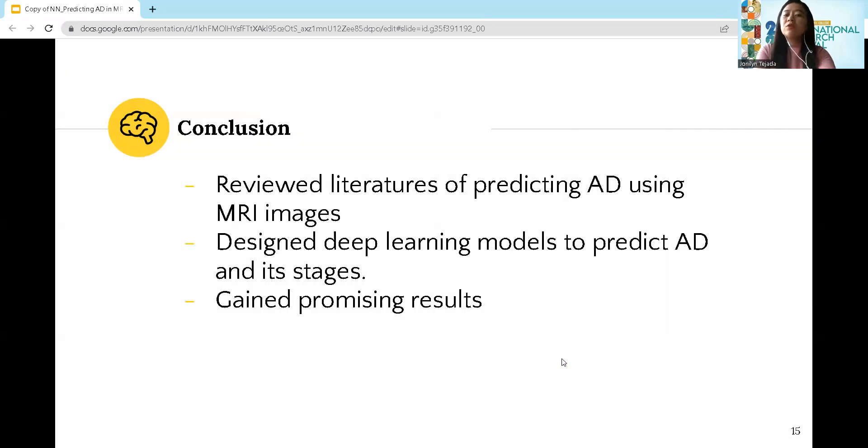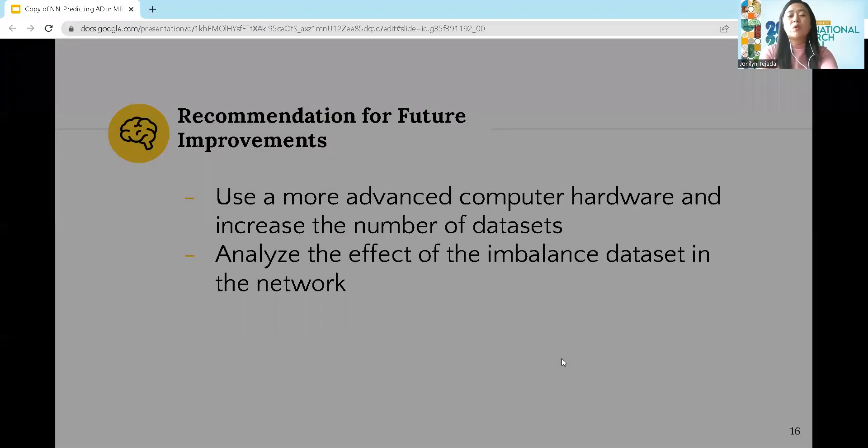In conclusion, we reviewed literatures that use MRI scans in predicting Alzheimer's disease. We also designed deep learning models to predict Alzheimer's disease and its stages, and we gained promising results.